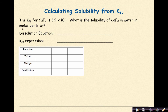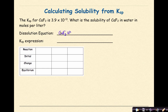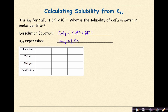Calculating solubility from KSP: The KSP for CaF2 is 3.9 times 10 to the negative 11. What is the solubility of CaF2 in water in moles per liter? Start with the dissolution equation: CaF2 with a double arrow gives Ca²⁺ and 2F⁻¹. The KSP expression is: KSP equals the concentration of Ca²⁺ times the concentration of F⁻ squared. A RICE table is used to organize the calculation.